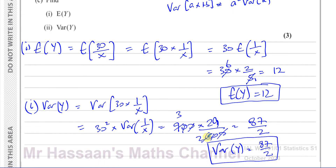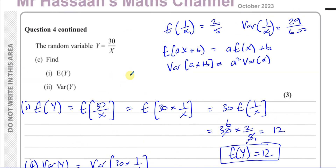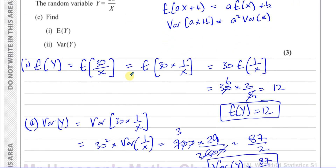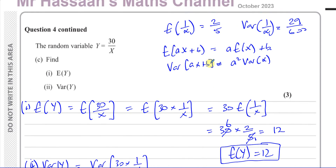So there's the answer: E(Y) = 12 and Var(Y) = 87/2 for parts 1 and 2 of part C. It's just using what we know about transformations of discrete random variables — since we know E(1/X) and Var(1/X), we can handle any transformation of them, and here Y = 30 × (1/X).